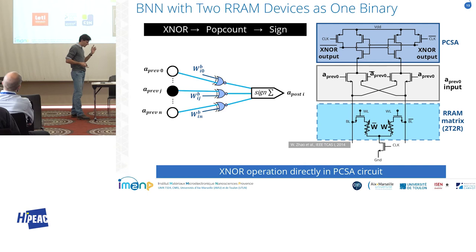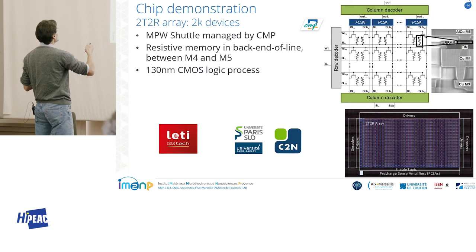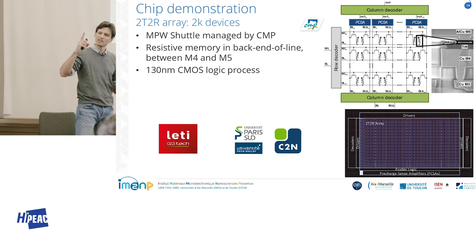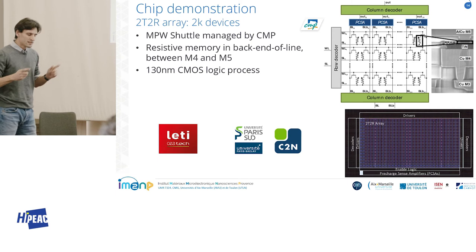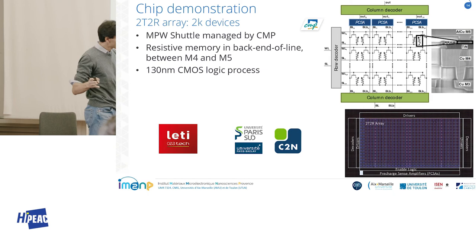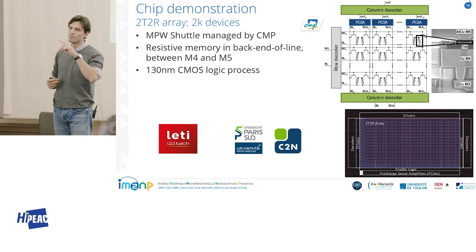To evaluate our approach, a circuit has been designed and manufactured. It integrates a 2T2R memory array with one kilobit (two kilodevices) and a differential sense amplifier. It is manufactured through an MPW shuttle managed by CMP, based on a 130-nanometer CMOS logic process, and the resistive memory is HfO2-based OxRAM integrated in the back end of line.